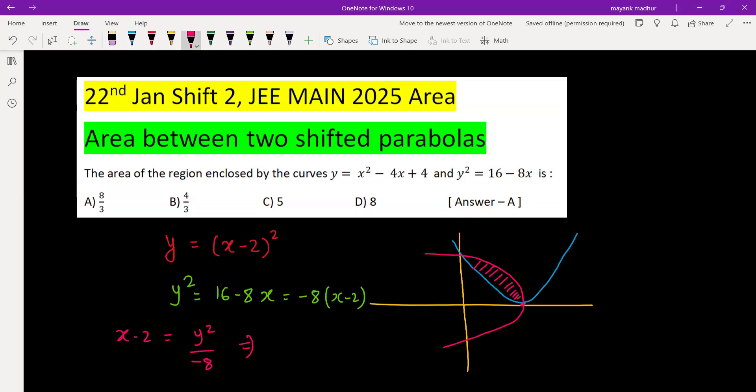From the first equation we will get y is equal to negative y square by 8 the whole square, y raised to 4 by 64. We are getting y is equal to 0 or y is equal to 4.